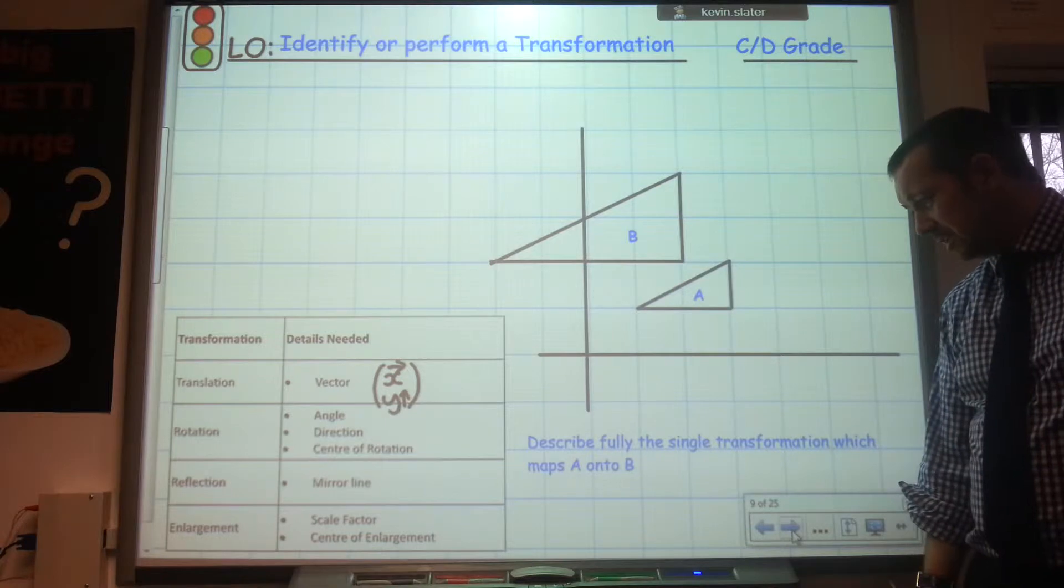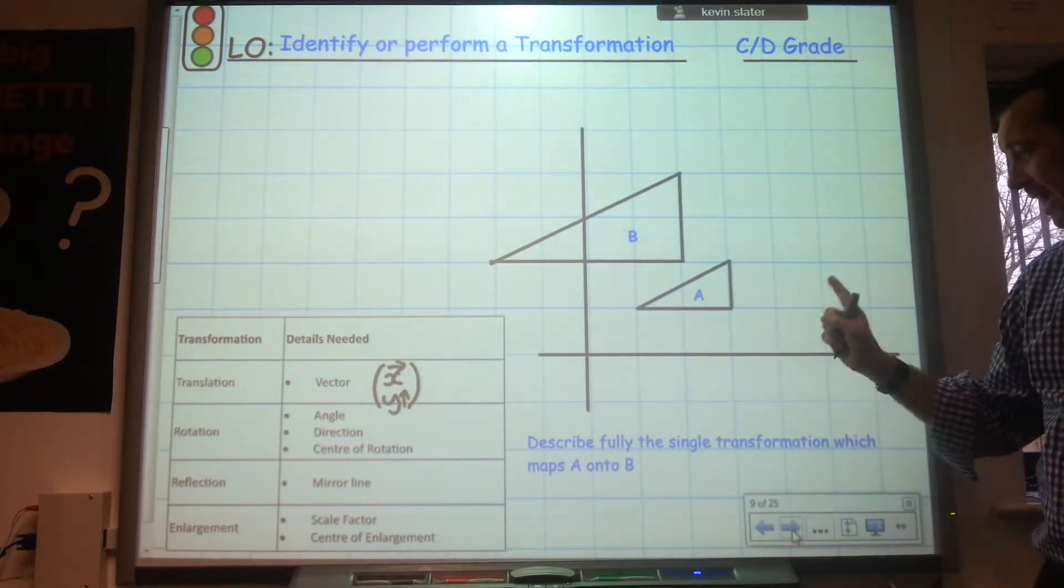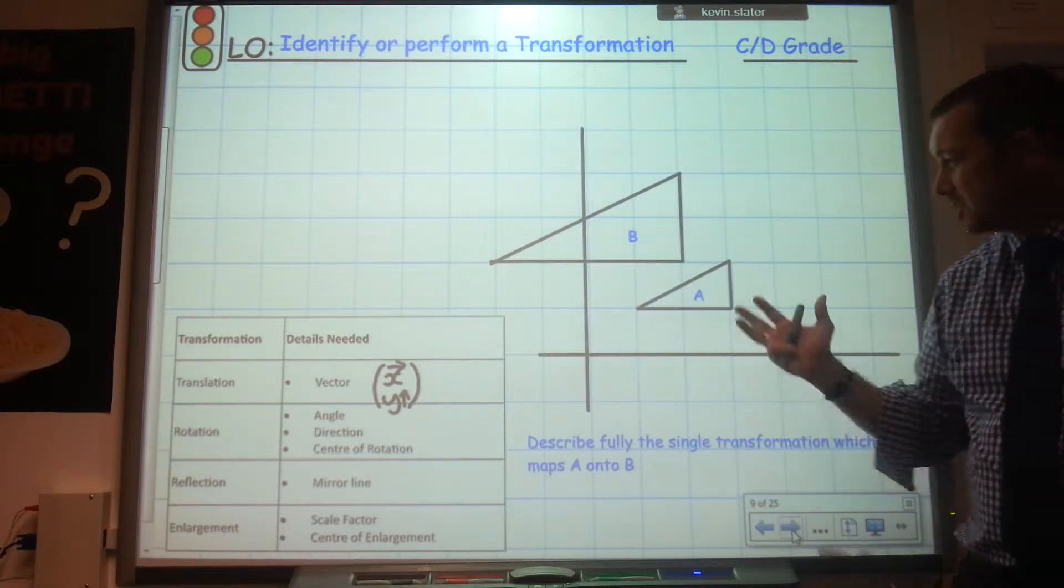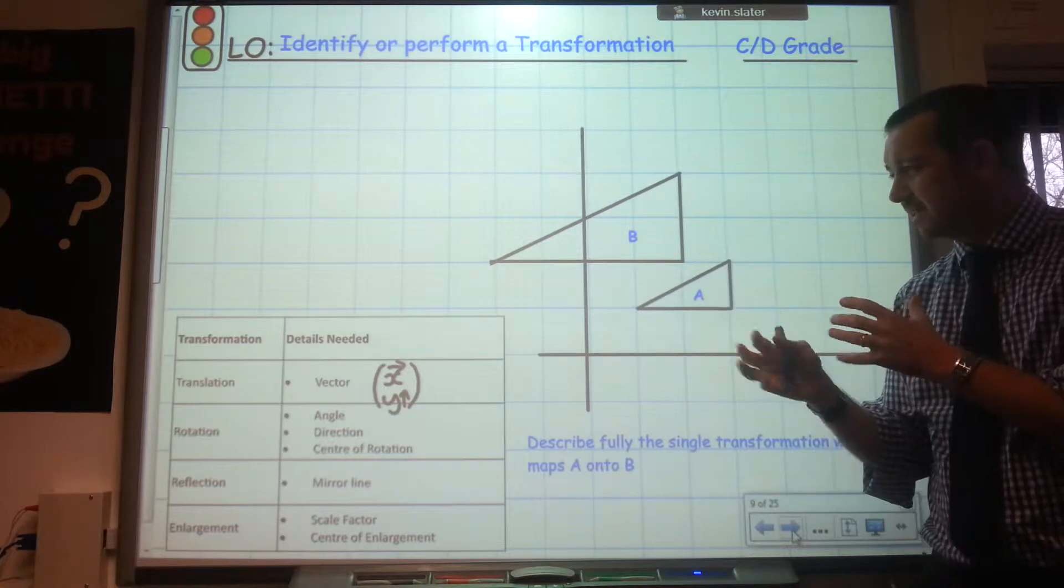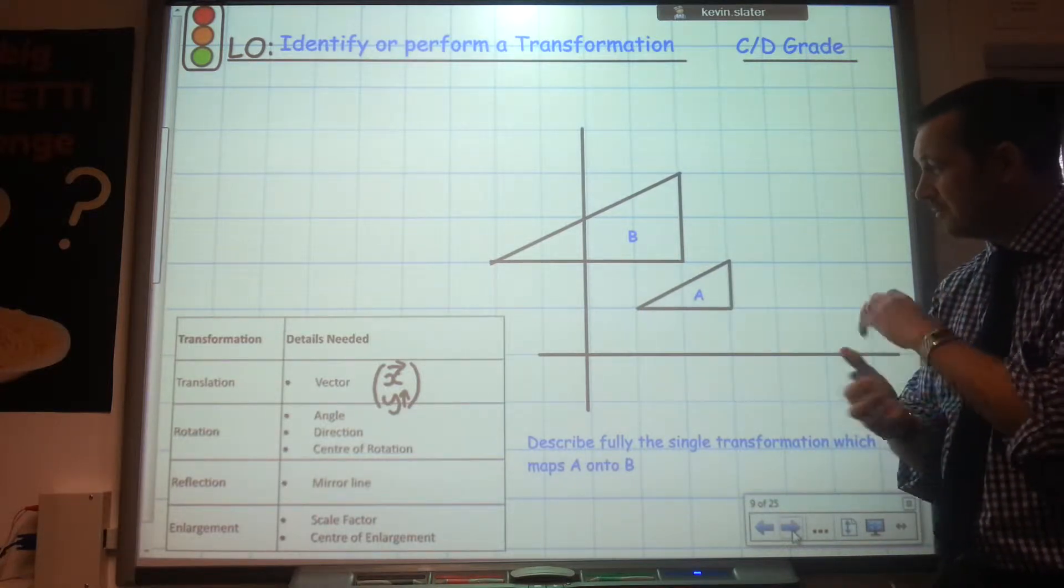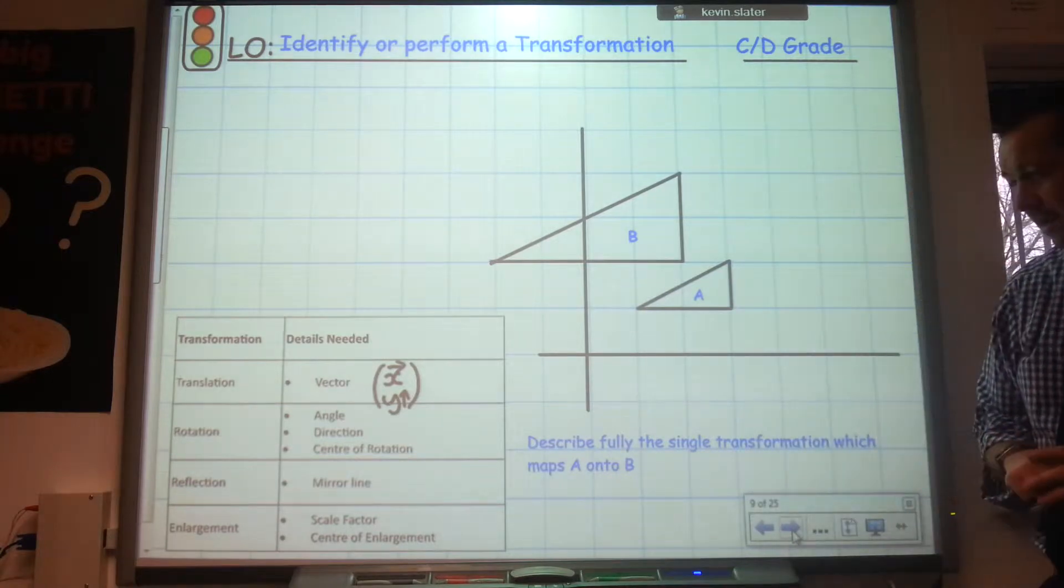On this question here, it asks me to describe fully the single transformation which maps A onto B. So I can see that it's not been reflected. It's a different size so it's not been translated or reflected or even rotated either. So I can see from my list of transformations that it's definitely enlargement.